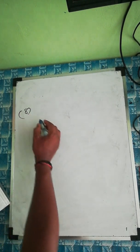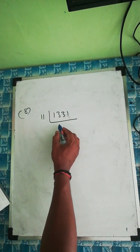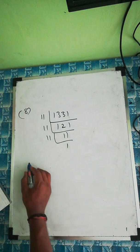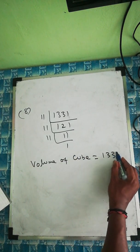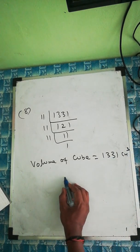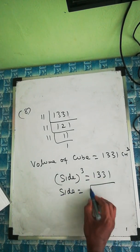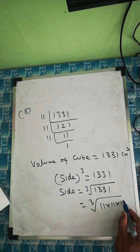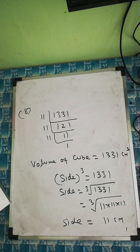Question number 8, the last question of this exercise: 1331 is given. We find the cube root. 11 into 11 is 121, and 121 into 11 is 1331. Volume of cube equals 1331 centimeter cubed is given. Volume of cube formula is side cubed, so side equals cubic root of 1331, which is 11. Therefore the side equals 11 centimeters. So the length of its edges is 11 centimeters. This exercise is over.